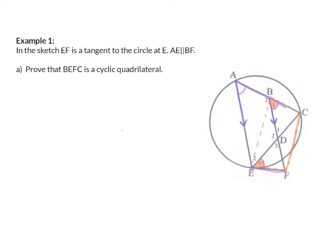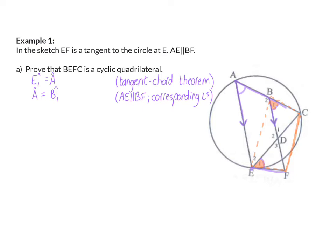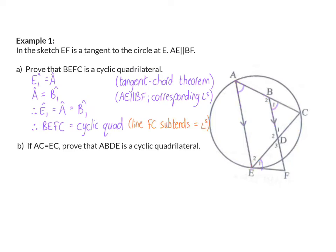Writing this down properly: E1 equals A — reason: tangent chord theorem. Next, A equals B1 — reason: corresponding angles, parallel lines. Therefore E1 equals A equals B1, so E1 equals B1. Because of this, BEFC is a cyclic quadrilateral — reason: line FC subtends equal angles.